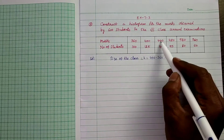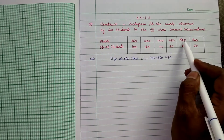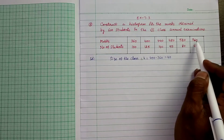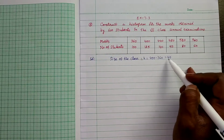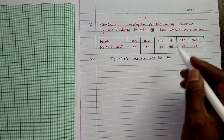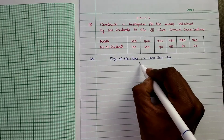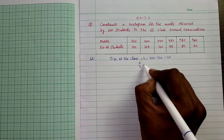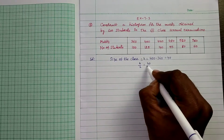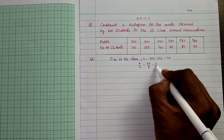Similarly, 480 minus 440 = 40, 520 minus 480 = 40, 560 minus 520 = 40. So this is the size of the class. Take half of the size of the class: H/2 = 40/2 = 20.